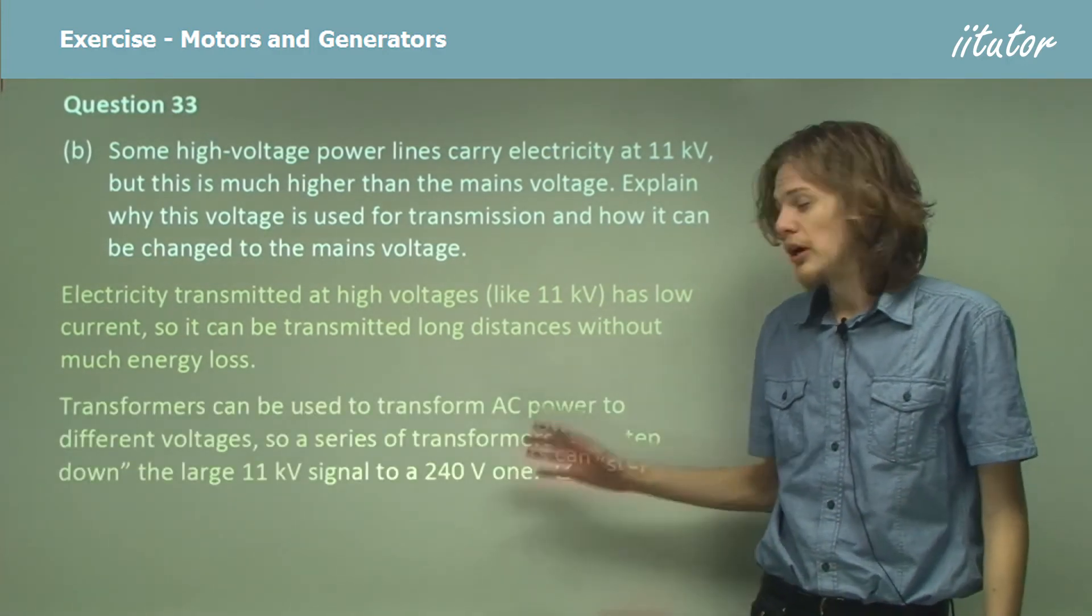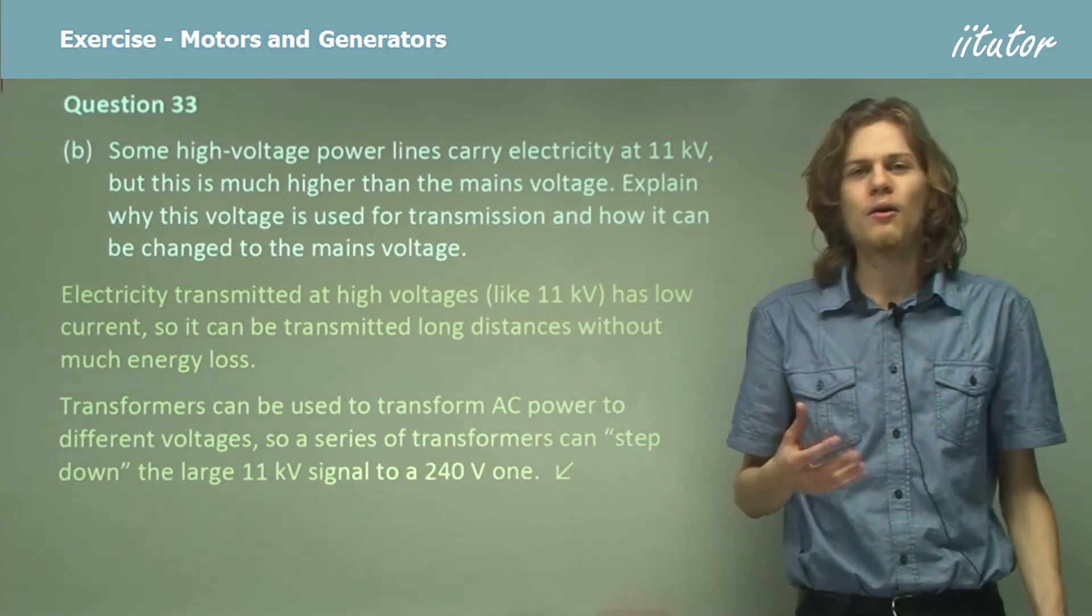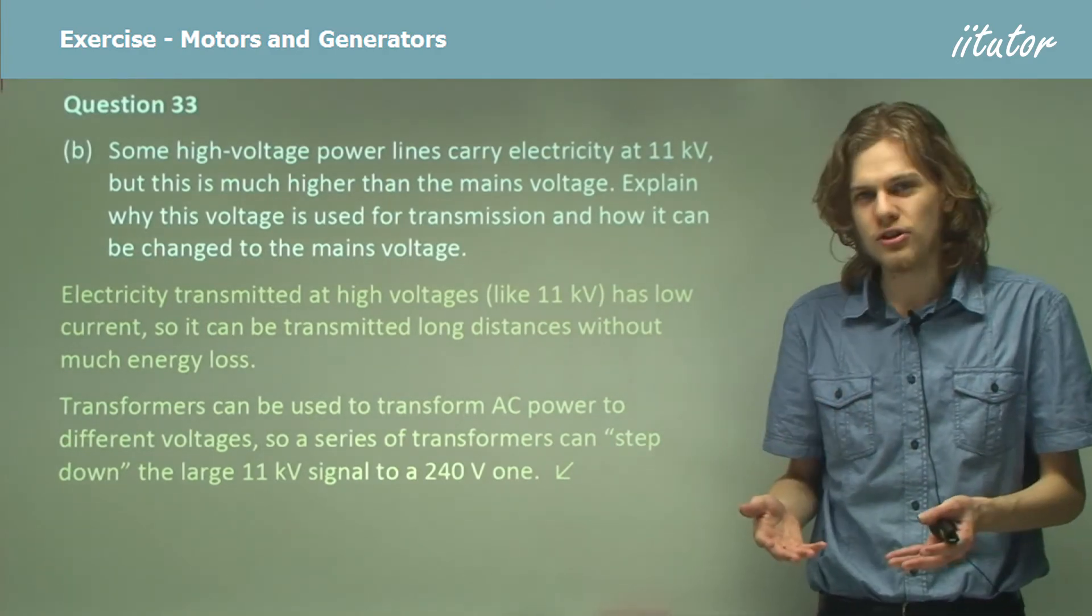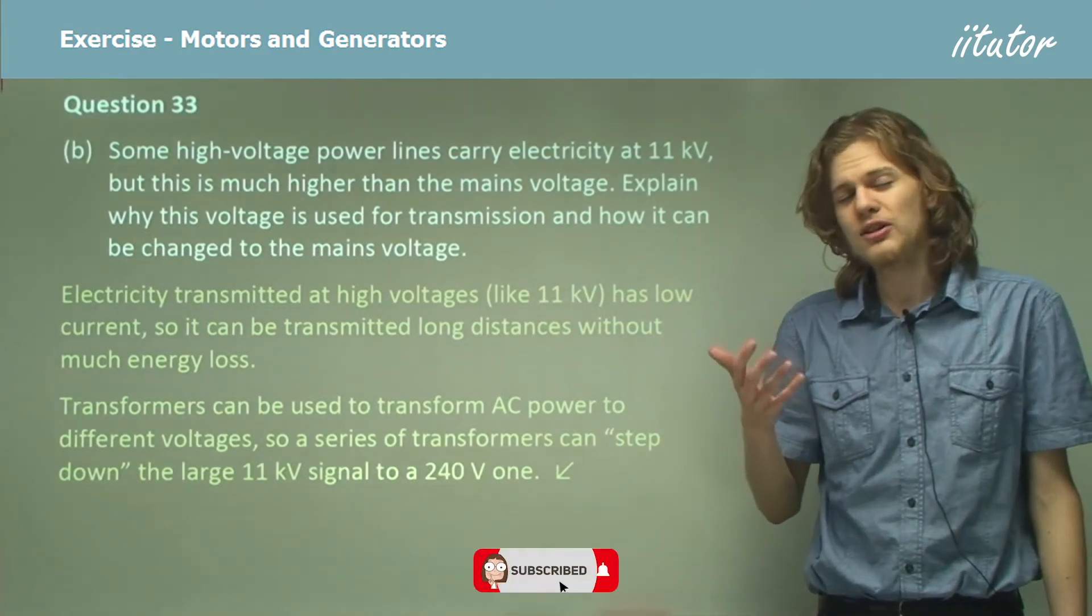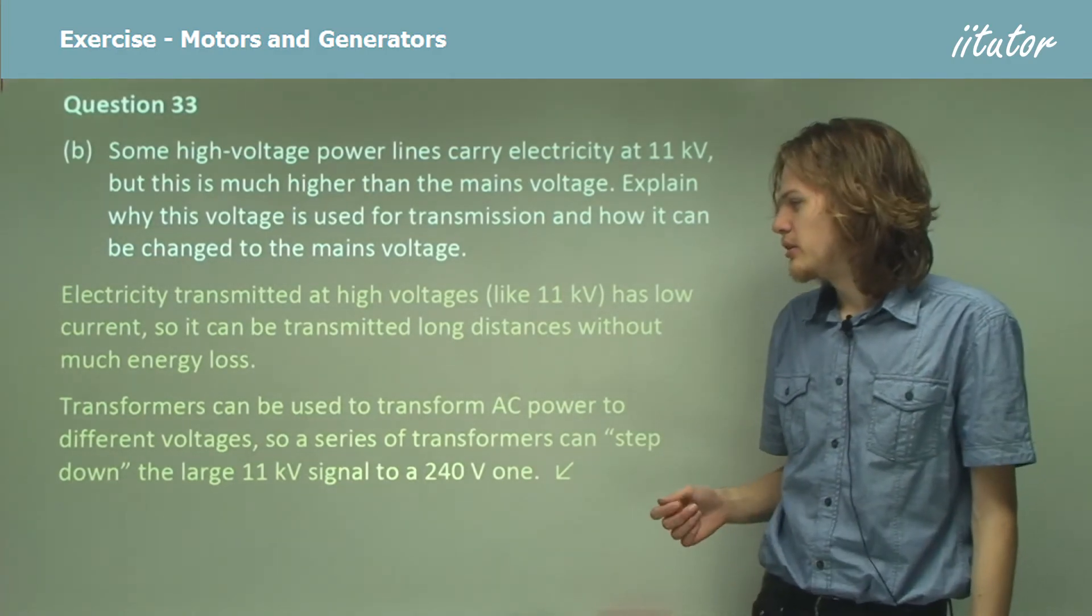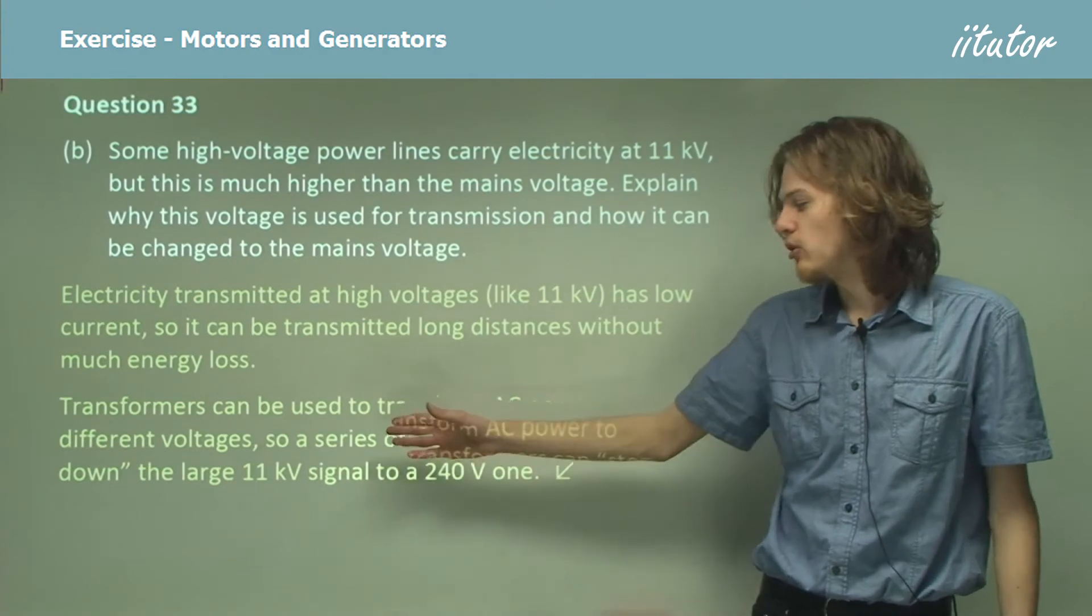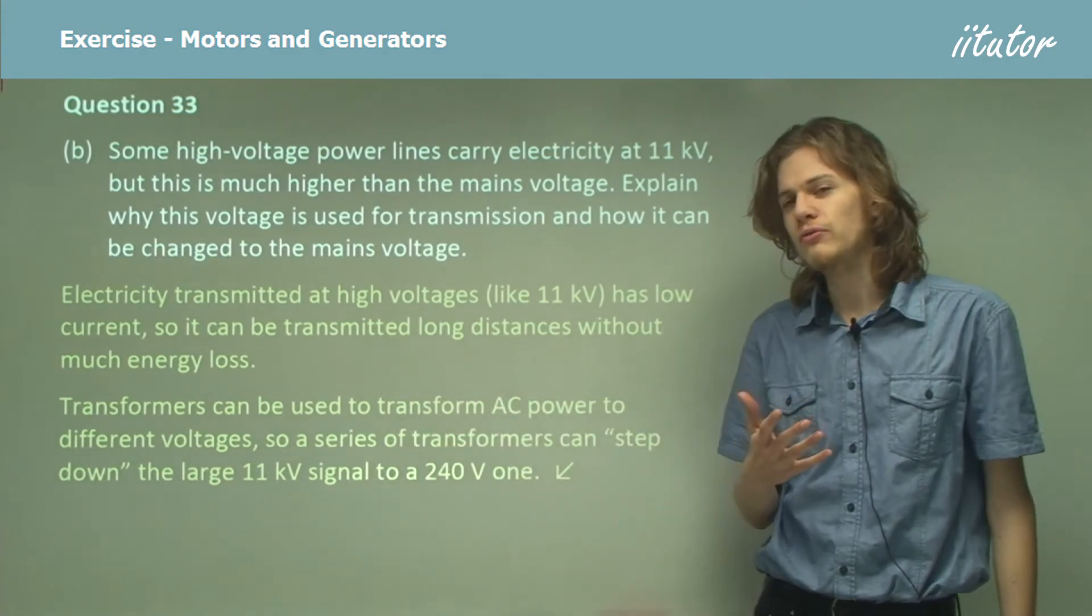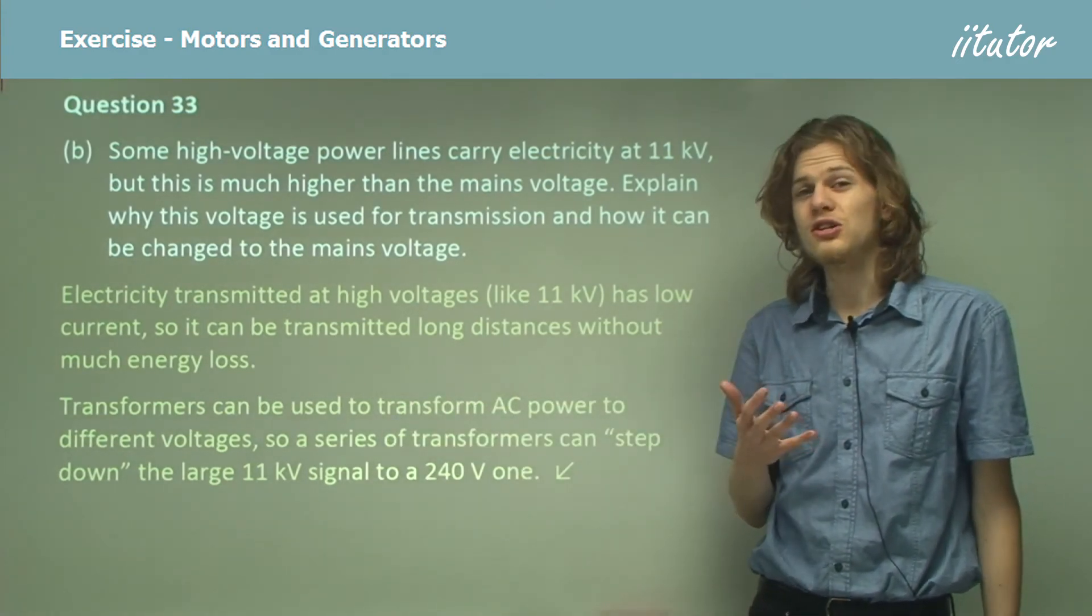So we can use transformers to turn AC power into higher voltages or lower voltages. It is in fact the main reason we use AC power over DC power. So it means that we can step down an 11 kilovolt signal to a 240 volt one, which is far easier to work with.